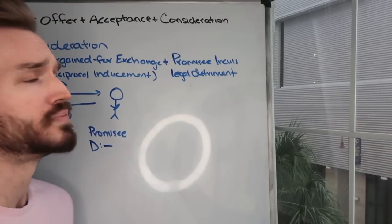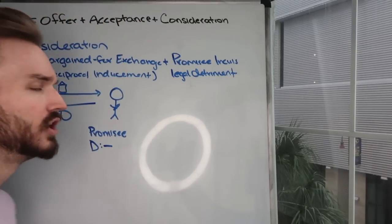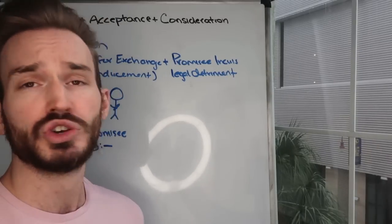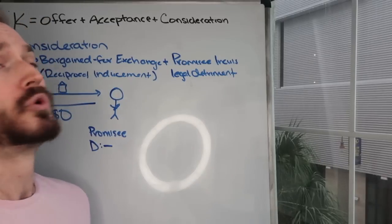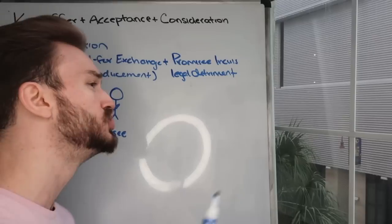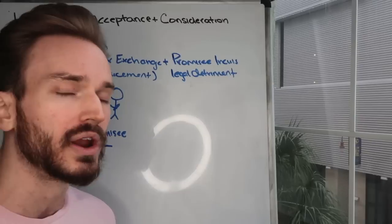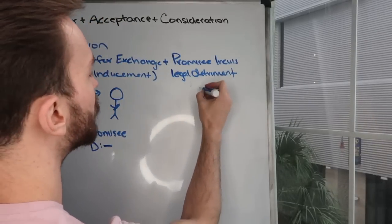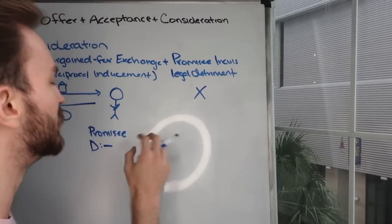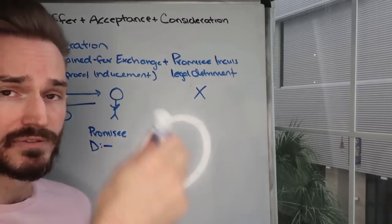Are you, the promisee, incurring a legal detriment? No — you are not incurring a legal detriment. You are giving up nothing that you are otherwise legally obligated to do. You're not forbearing or refraining from doing anything you have a legal right to do. You're literally doing nothing, so the promisee is incurring no legal detriment. Off the top, we know we do not have consideration here. This is a clear gift promise.